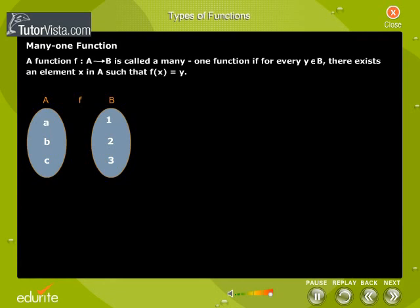A function f: A → B is called a many-to-one function if two or more elements of domain are associated with one element of co-domain. Here, the domain is A and the co-domain is B. Therefore, this is an example of a many-to-one function.